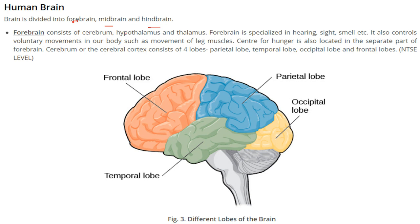The brain has the forebrain, midbrain, and hindbrain. The forebrain consists of the cerebrum, the hypothalamus, and the thalamus. The forebrain is specialized for hearing, sight, and smell. It also controls involuntary movements in the body, like the leg muscles — involuntary meaning actions that do not need thinking, such as walking while thinking about something else. There is also a centre for hunger located in a separate part of the forebrain.